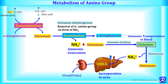In the video on overview of amino acid metabolism, I have explained that the metabolism of amino acids is divided into two important steps: first, metabolism of amino group, and second, metabolism of the remaining carbon skeleton. In the metabolism of amino group, the first step is removal of nitrogen, that is removal of amino group.